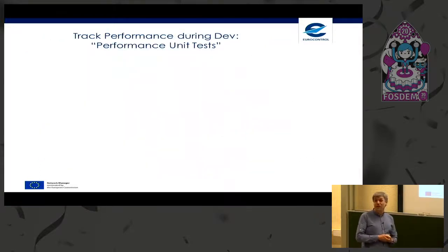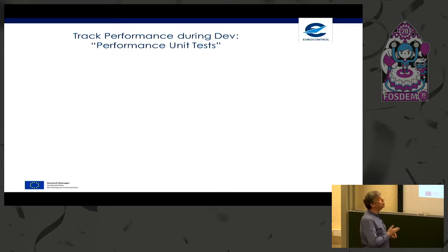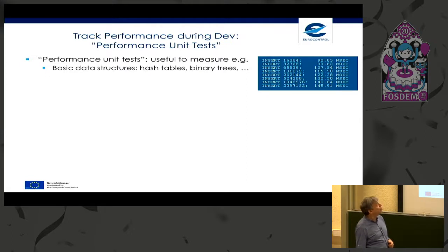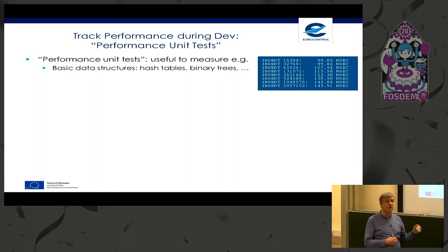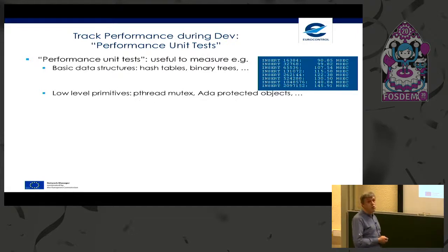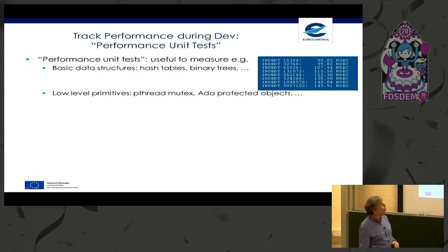We have high performance requirements and cannot afford degradation, so we have to track performance during development. One tool we can use is performance unit tests. These are useful for measuring basic data structures: hash tables, binary trees, and so on. For example, a performance unit test can check the speed of insert in a balanced binary tree and verify that the expected O(n log n) behavior is respected. We can also use them to check low-level primitives such as pthread mutex, and ADA protected objects.